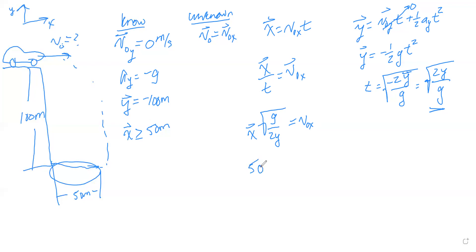We plug in our numbers: 50 meters times the square root of 9.8 meters per second squared divided by 2 times 100 meters, and v_initial_x has to be greater than or equal to that. We do that calculation and we get 11.07 meters per second.